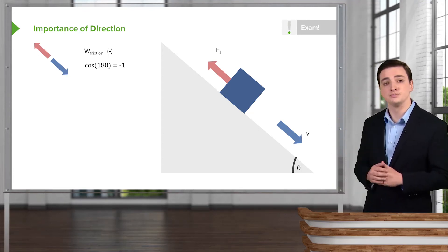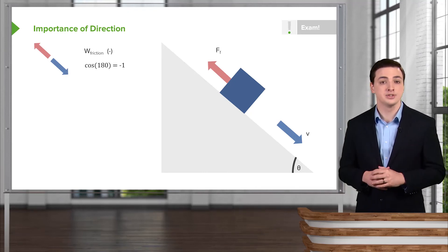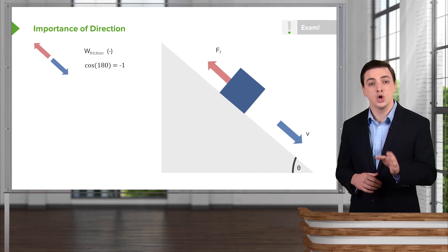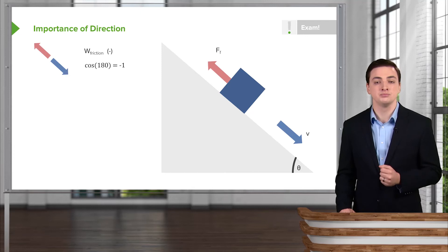They're pointing in opposite directions. And so in this case, the cosine of 180 degrees will be minus one, meaning that your work will be negative, meaning that the friction is trying to slow your object down.